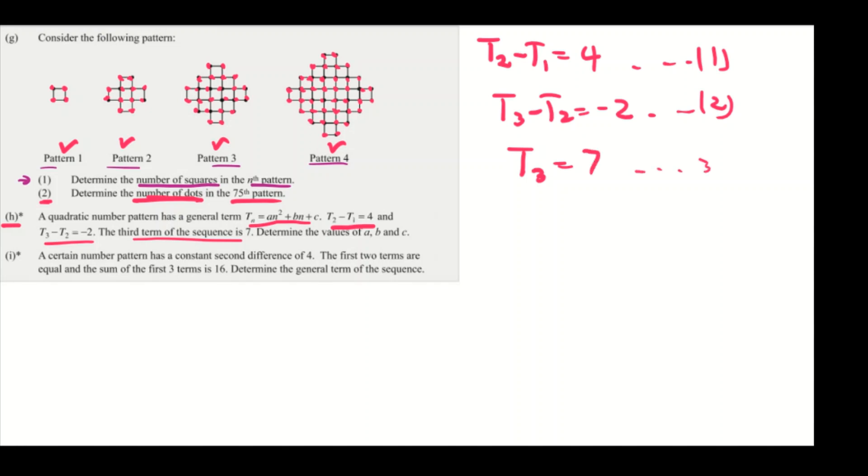And then the third term of the sequence is 7, so T₃ equals 7. That's what we are given. Also determine the values of a, b, and c. So the first thing you're going to do is you already have T₃, so you can substitute T₃ here to find T₂, and substitute T₂ here to find T₁.